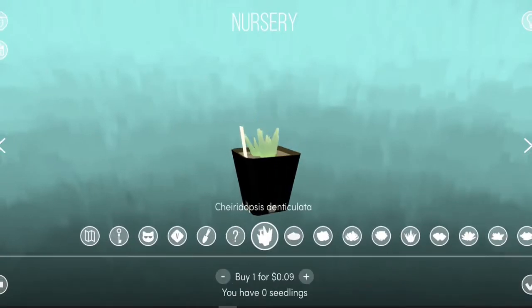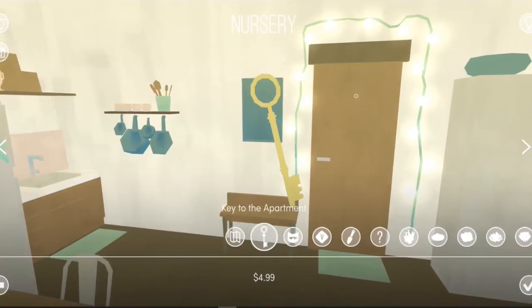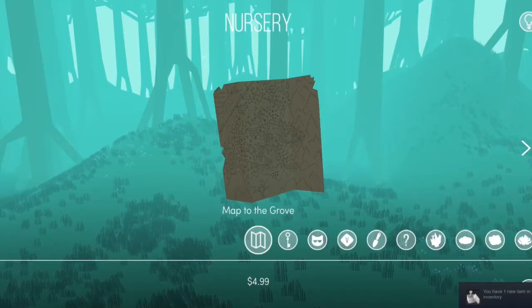You can pay real human money to get various things such as extra plant types, a key to two rooms and a map to some place called the grove.